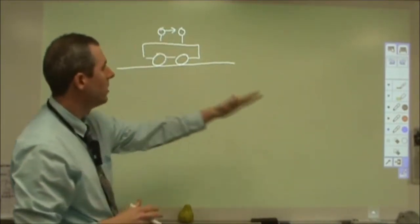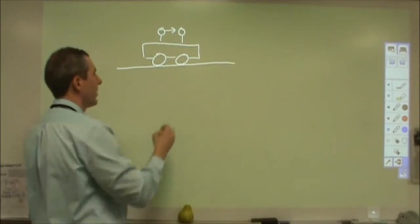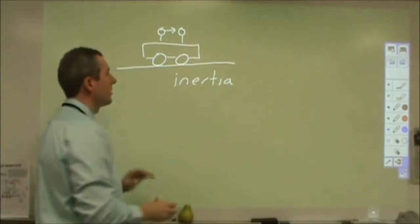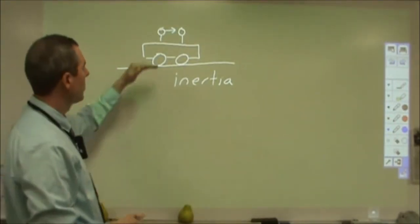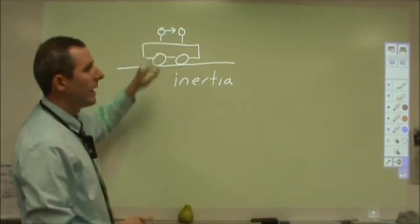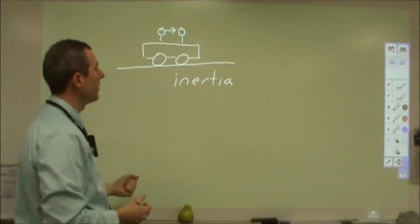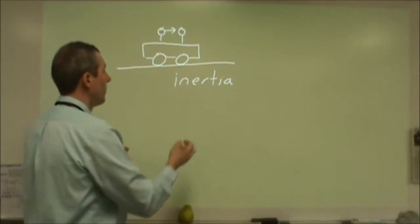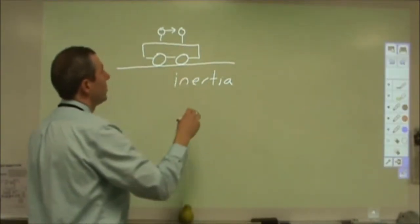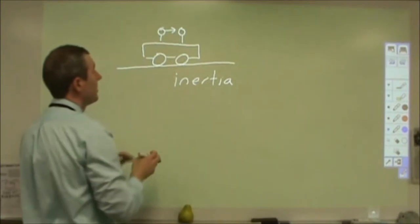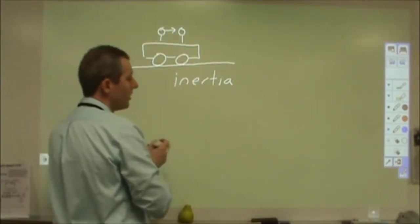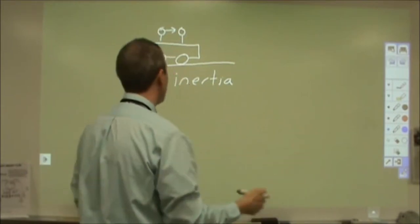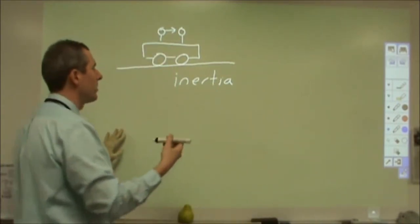The question then becomes: why does the person continue moving forward when the car slams on the brakes? To say it's because of inertia leaves out so much detail that it allows us to skip over whether you actually understand what's causing this person to move forward. In order for someone to change the direction of their motion, a force needs to be applied by some object. The person was moving prior to braking and continued until some object exerted a force on them.